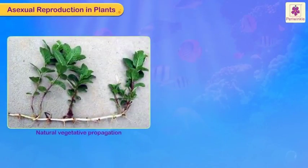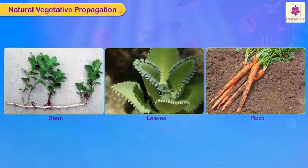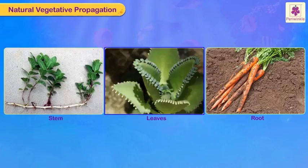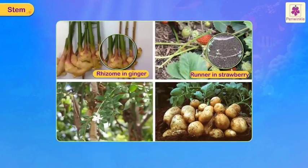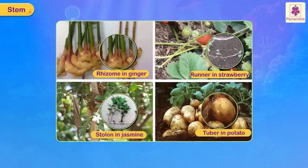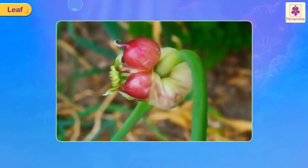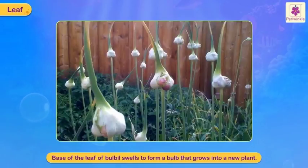Vegetative propagation occurs naturally or can be induced by humans. In natural vegetative propagation, it occurs through stems, leaves, and roots. For example, rhizome in ginger, runner in strawberry, stolon in jasmine, and tuber in potato give rise to new plants. The leaf base of a bulb swells to form a bulb that grows into a new plant.